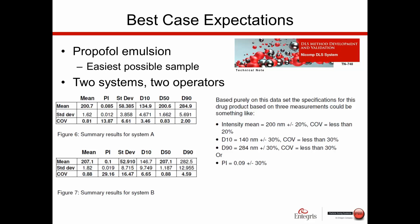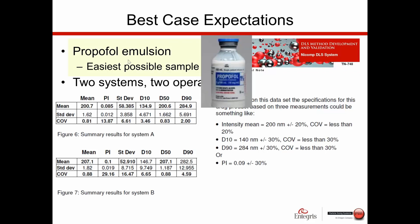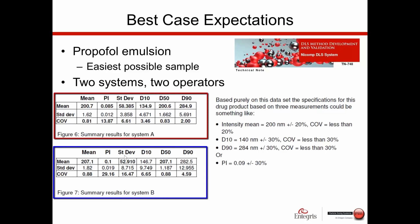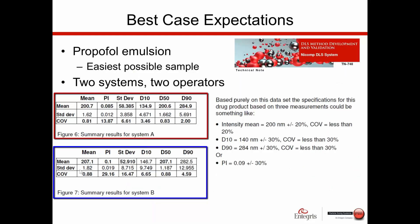The data shown here comes from a technical note on DLS method development and validation. A fairly easy sample — propofol, a pharmaceutical emulsion — was used in what you could call an intermediate precision test: two systems, two operators on two different days. The results from system A and system B show that what we usually focus on is the intensity mean and the polydispersity index, and the results are very similar but not exactly the same.